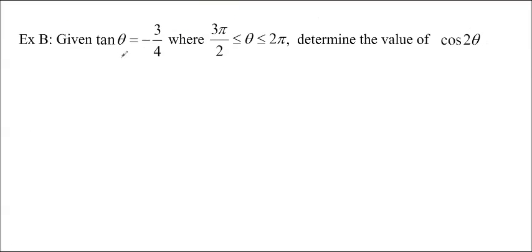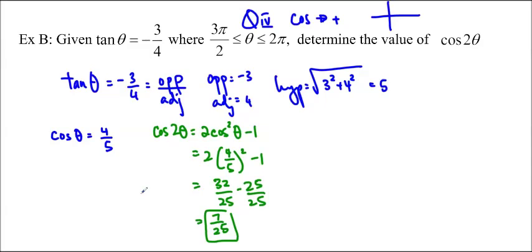So we're going to do exactly the same thing for this one, tan theta equals negative 3 over 4. And you'll notice that we have a specific quadrant that we're doing. So why don't you pause the video, try the question, and I'll come back with the answer. Okay, so welcome back, and hopefully you solved it and you got 7 over 25.